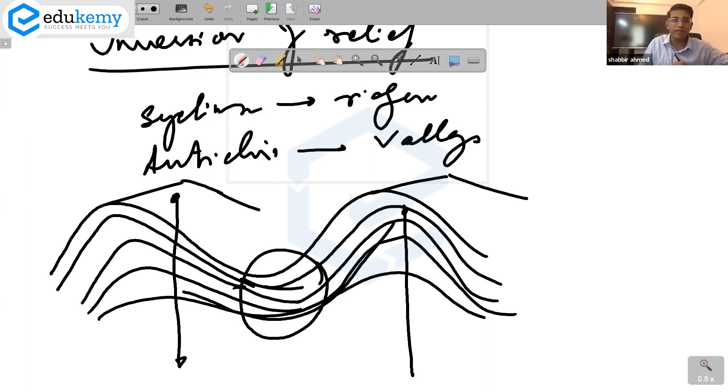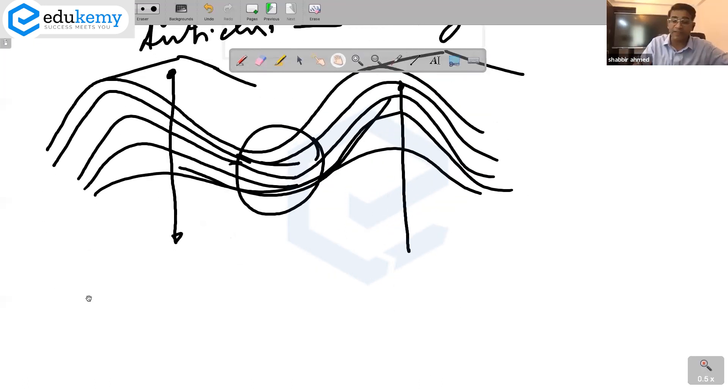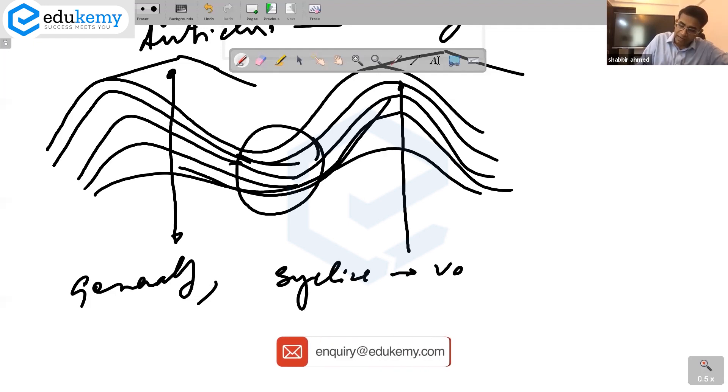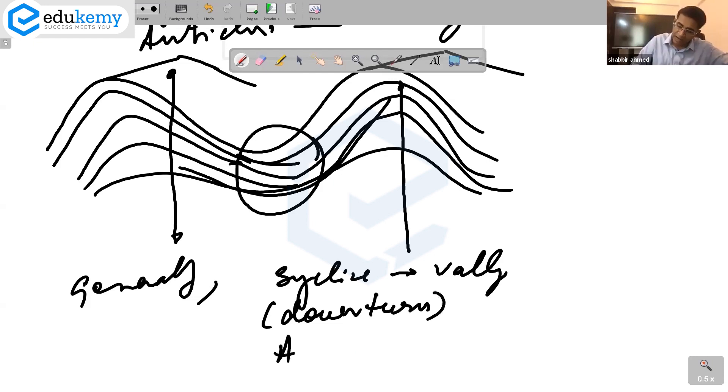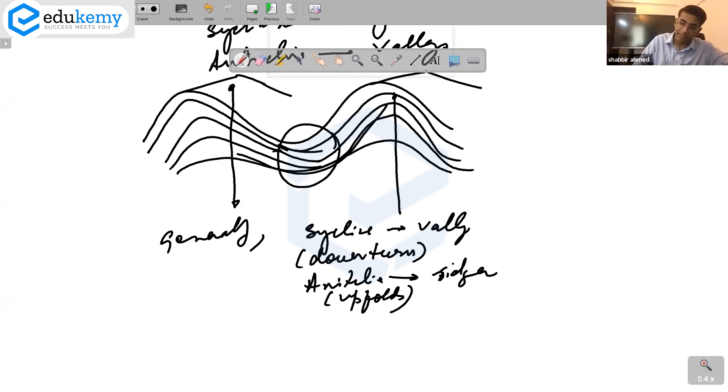In inversion, the syncline floor becomes the ridges. The syncline becomes the elevation. Otherwise, generally, what we have is the synclines are the valleys, synclines are the downturns, and the anticlines are the ridges, these are the up folds. This is what happens generally.